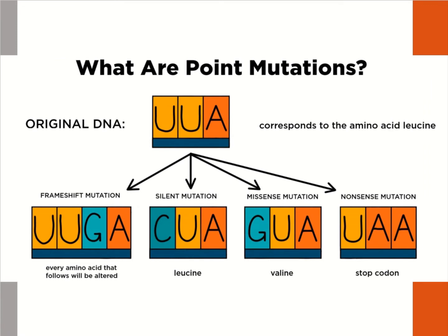Looking more closely: if we have UUA, which codes for the amino acid leucine, and a frameshift mutation occurs, every amino acid that follows will be altered. With a silent mutation — replacing the U with a C — we still get leucine. In a missense mutation, replacing the U with a G gives us a completely different amino acid: valine. And in a nonsense mutation, replacing U with an A gives us a stop codon.